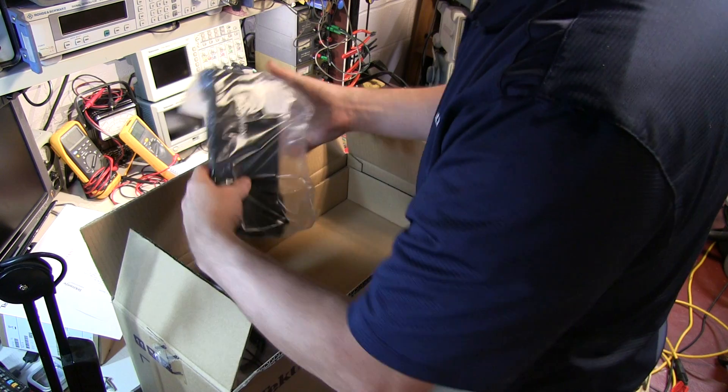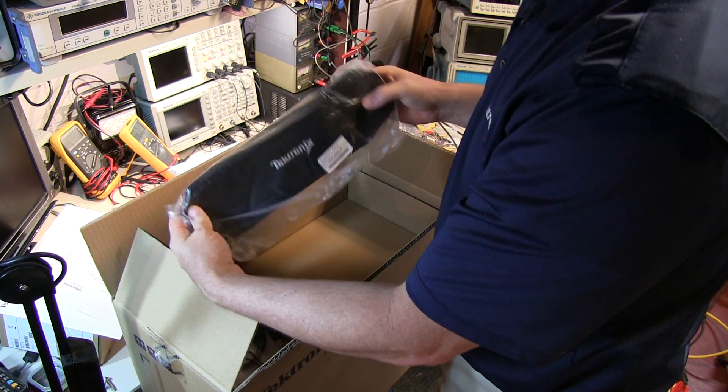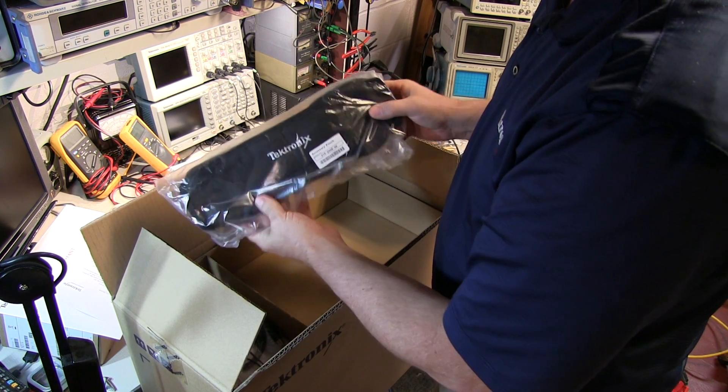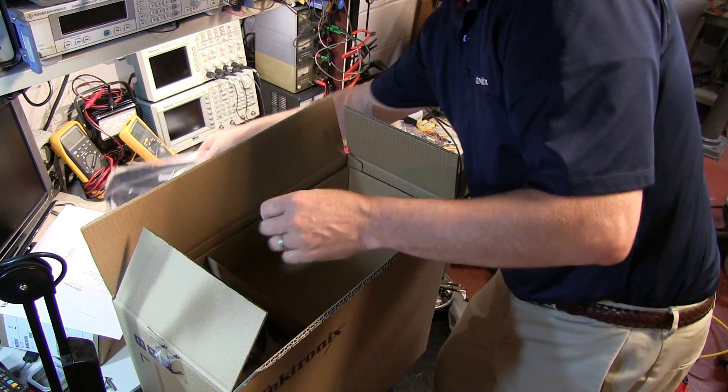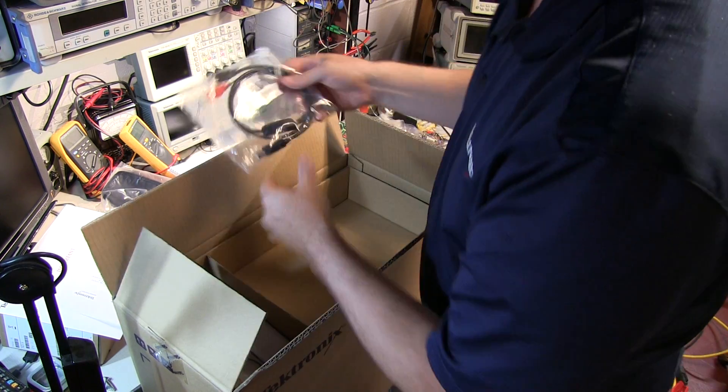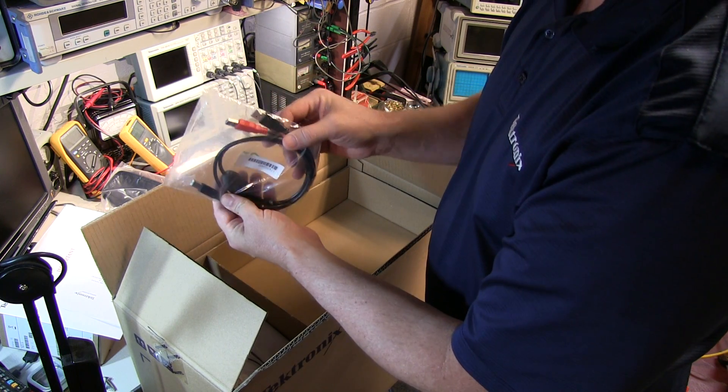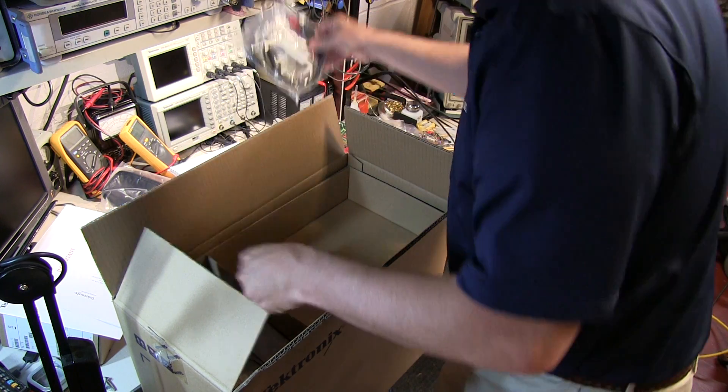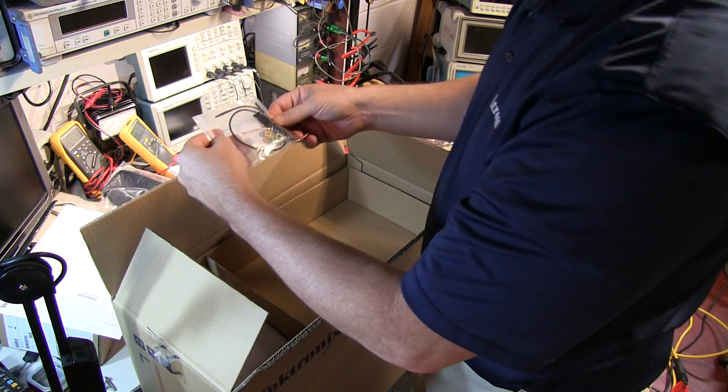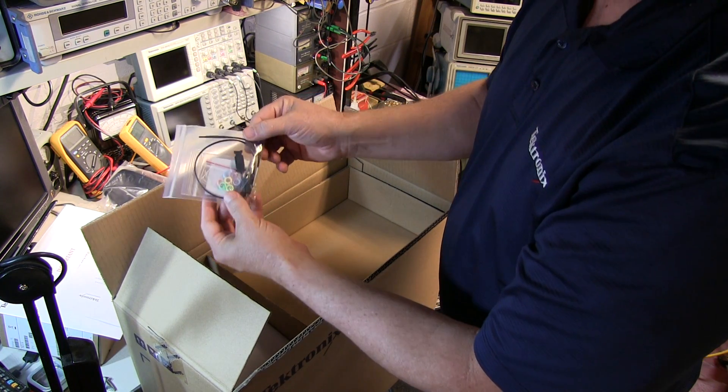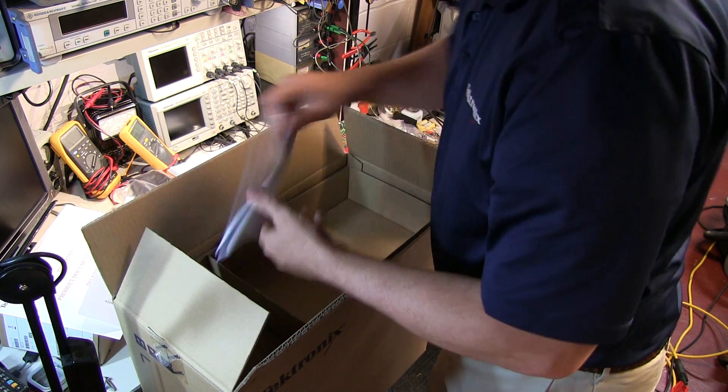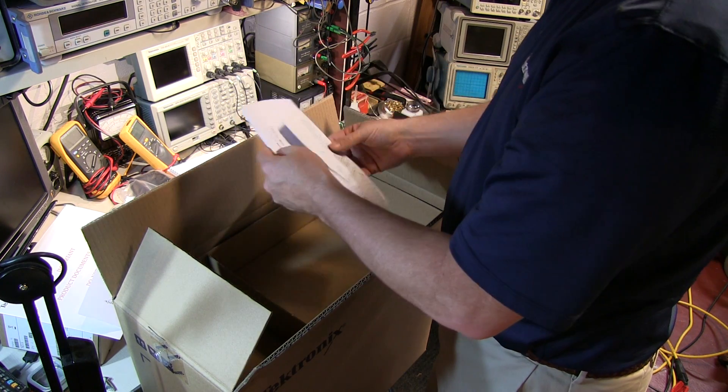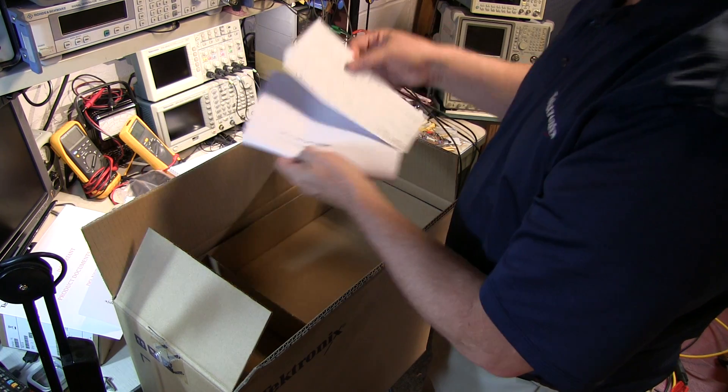We have over here the little pouch that would attach to the back to hold the probes and accessories when you move the scope from bench to bench. We've got the USB cable that's used to power up the demo board, a little bag of accessories for the probes, and the instruction manual for the demo board itself.